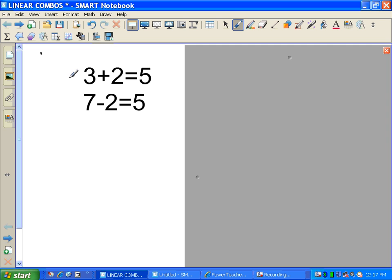If we look at this equation, 3 plus 2 equals 5. Agree? I hope so. The bottom equation, 7 minus 2 is equal to 5. Another true equation. So I've got two equations that are true.